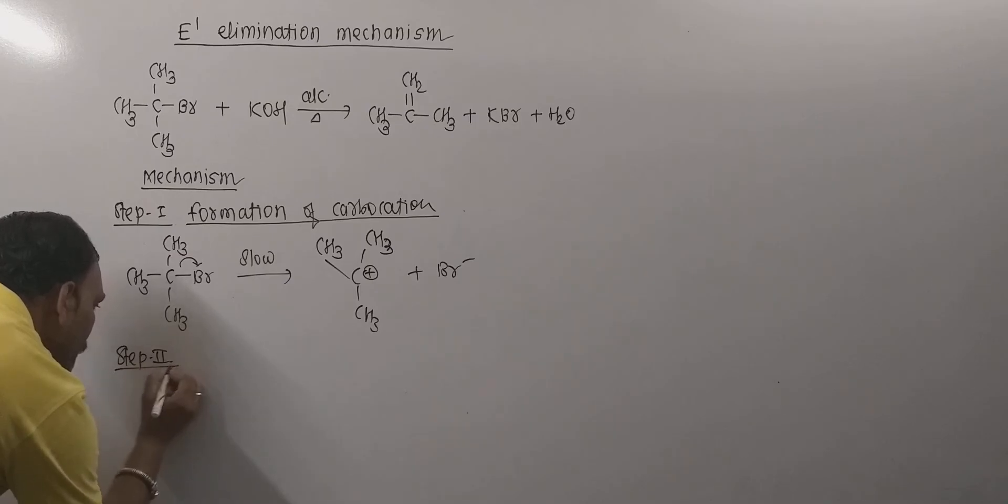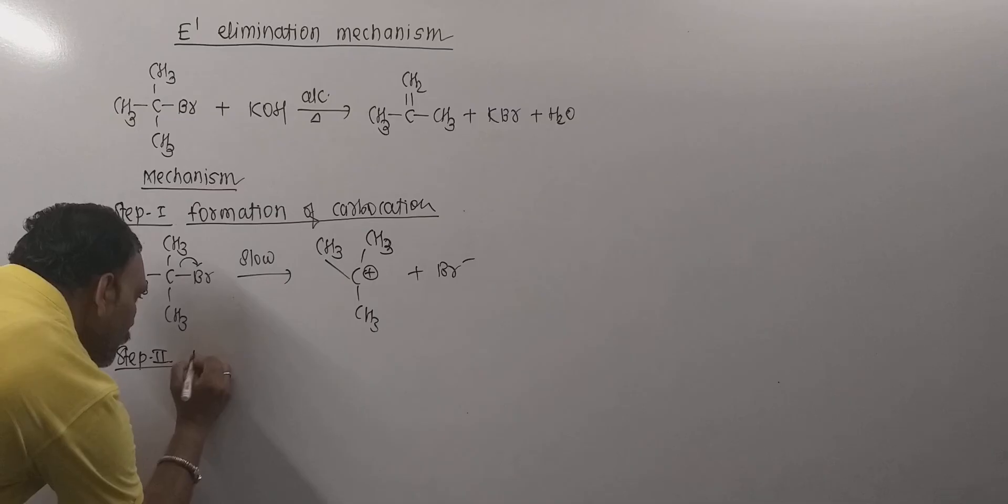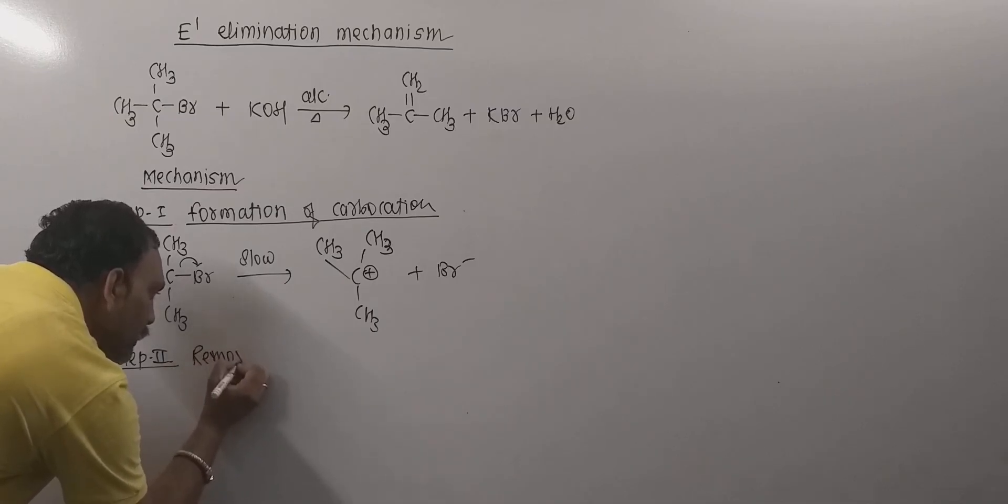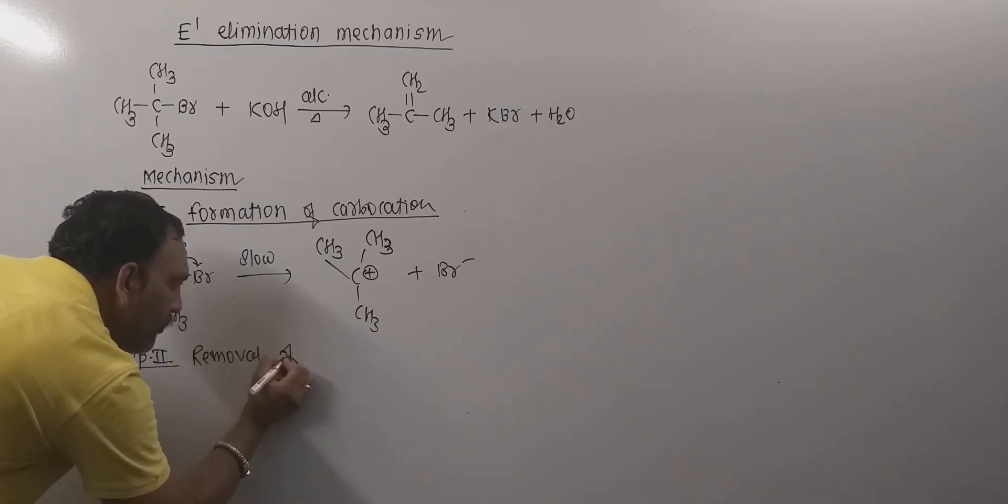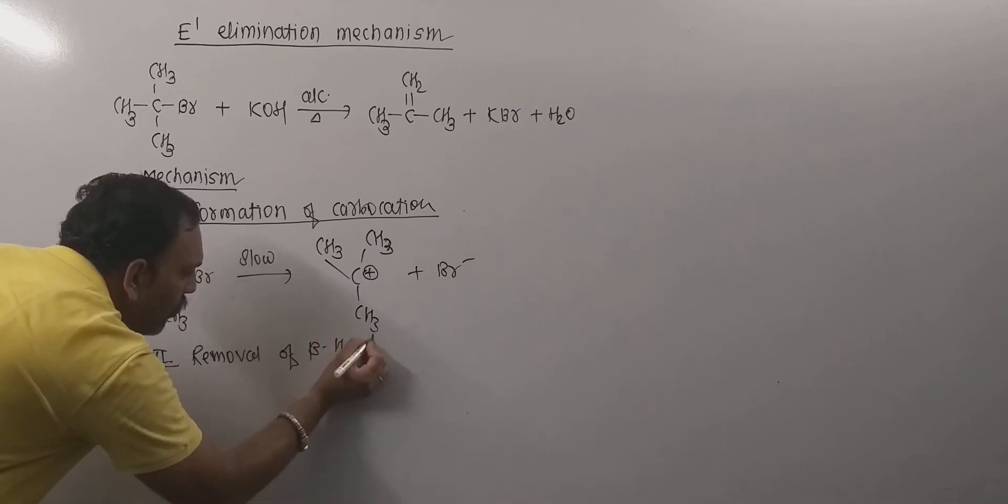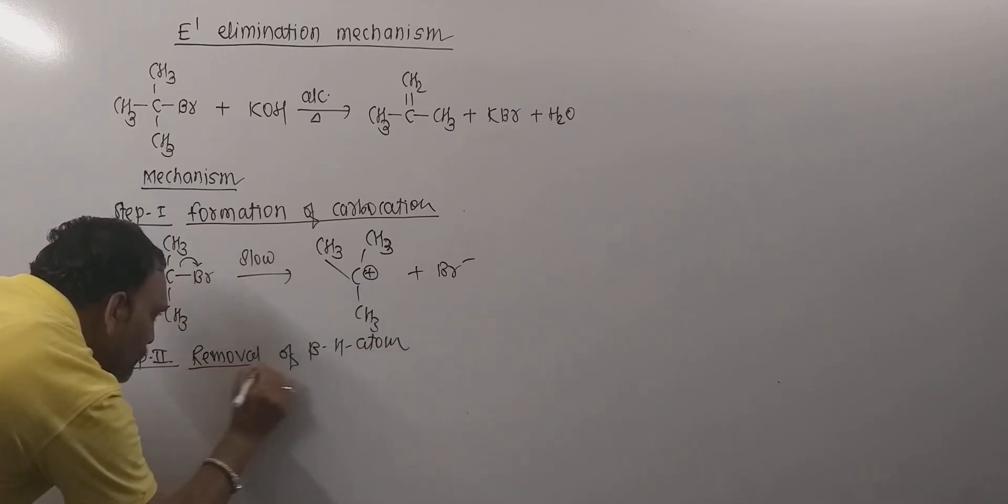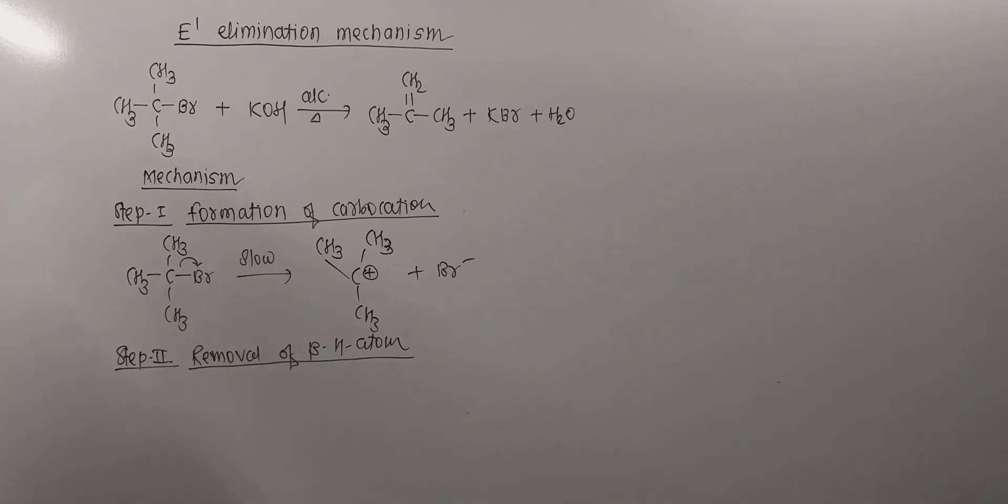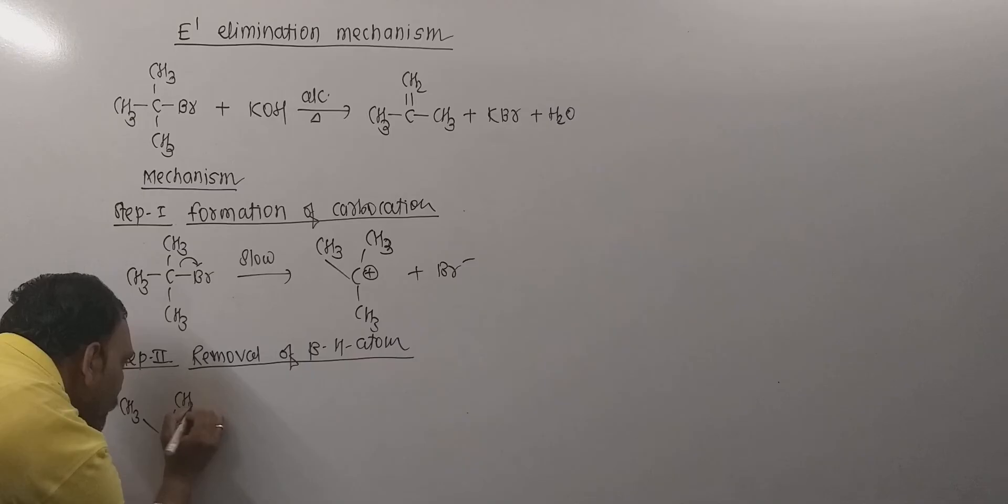Now in the second step: Step number two is faster than the first step comparatively. What happens in this case is removal of the beta hydrogen atom takes place. Our base removes the beta hydrogen.